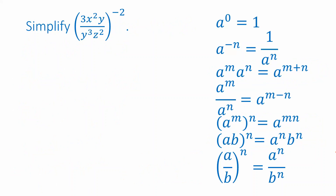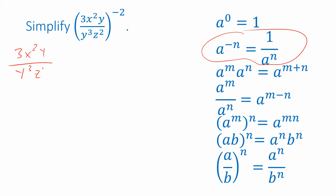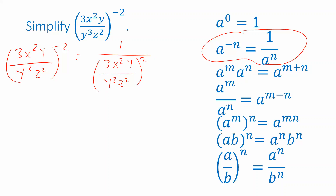This next question will let us use a few more of the properties. First of all, notice that we have a negative exponent. This property tells us that we can think of a negative exponent as a reciprocal. So the quantity 3x squared y over y cubed z squared, raised to the negative 2, is just a reciprocal of that expression quantity squared. Since 1 over a fraction is just the reciprocal of that fraction, we'll rewrite this as y cubed z squared over 3x squared y, quantity squared.